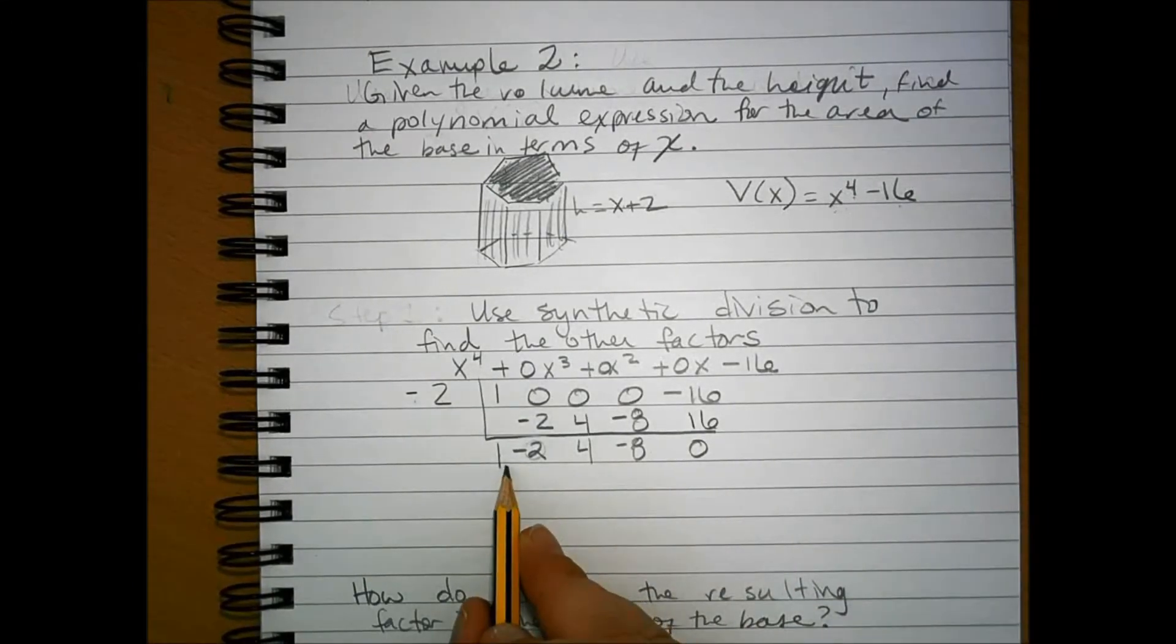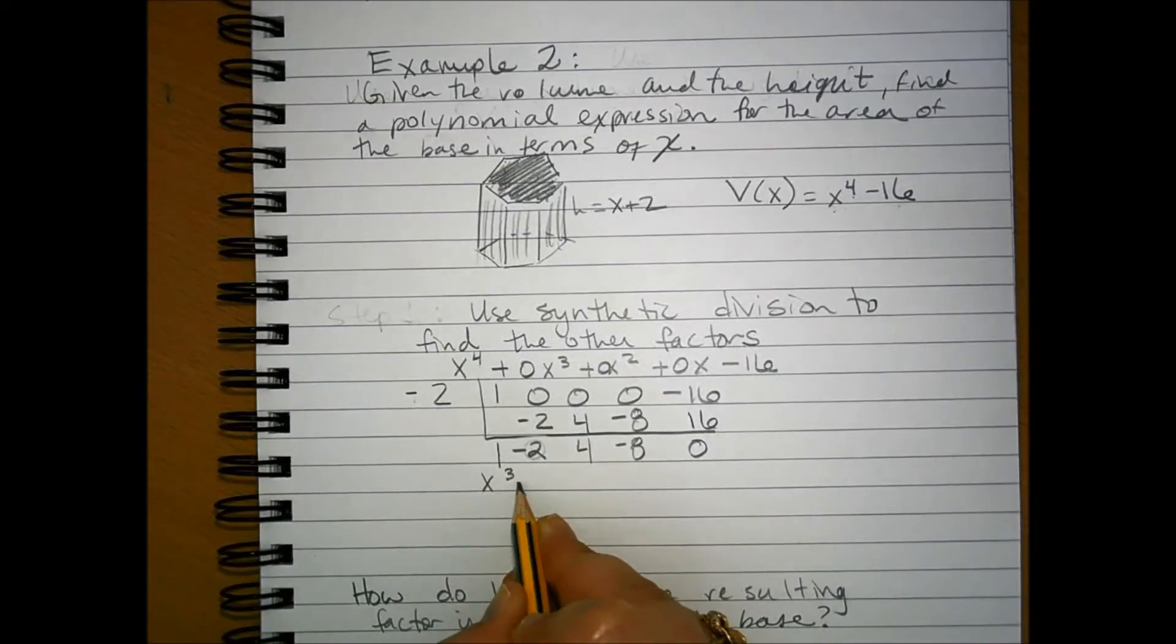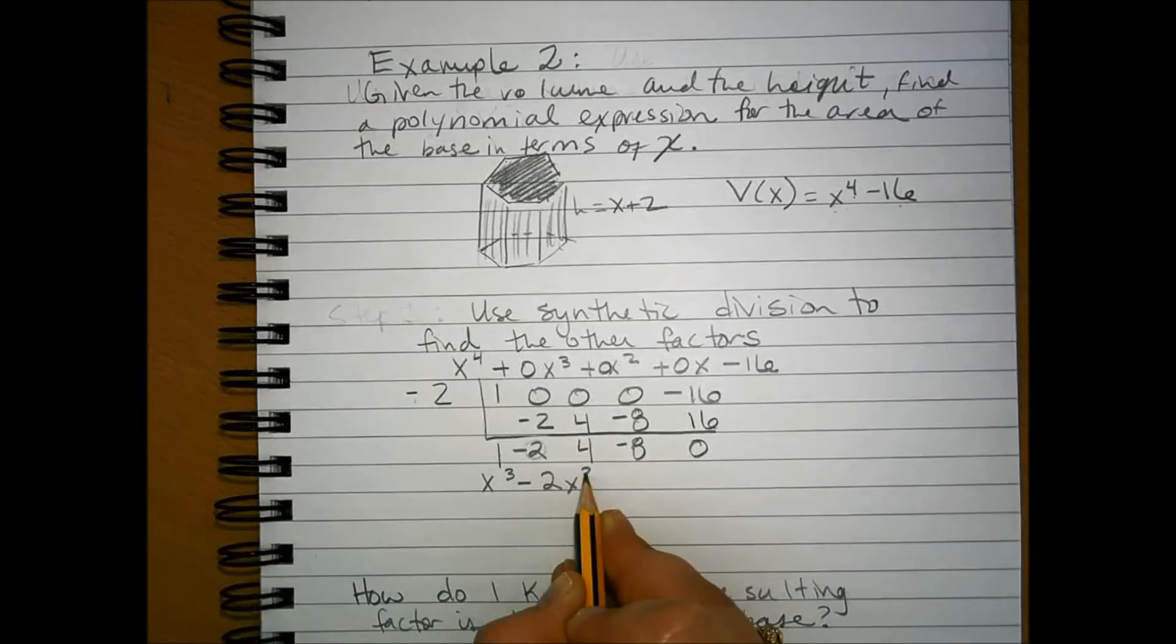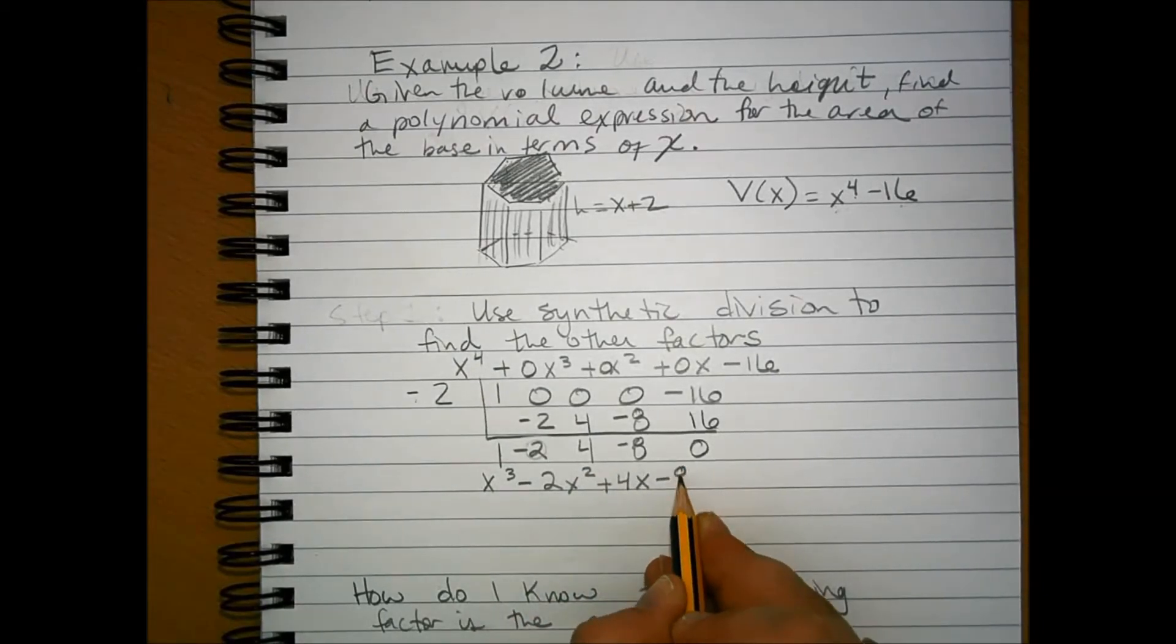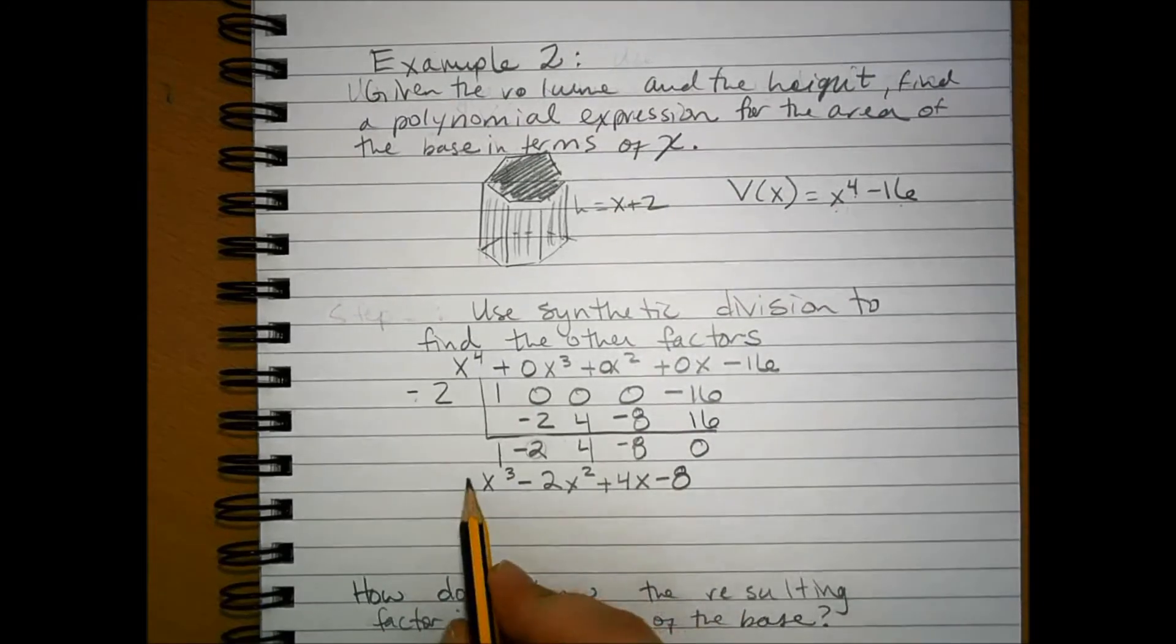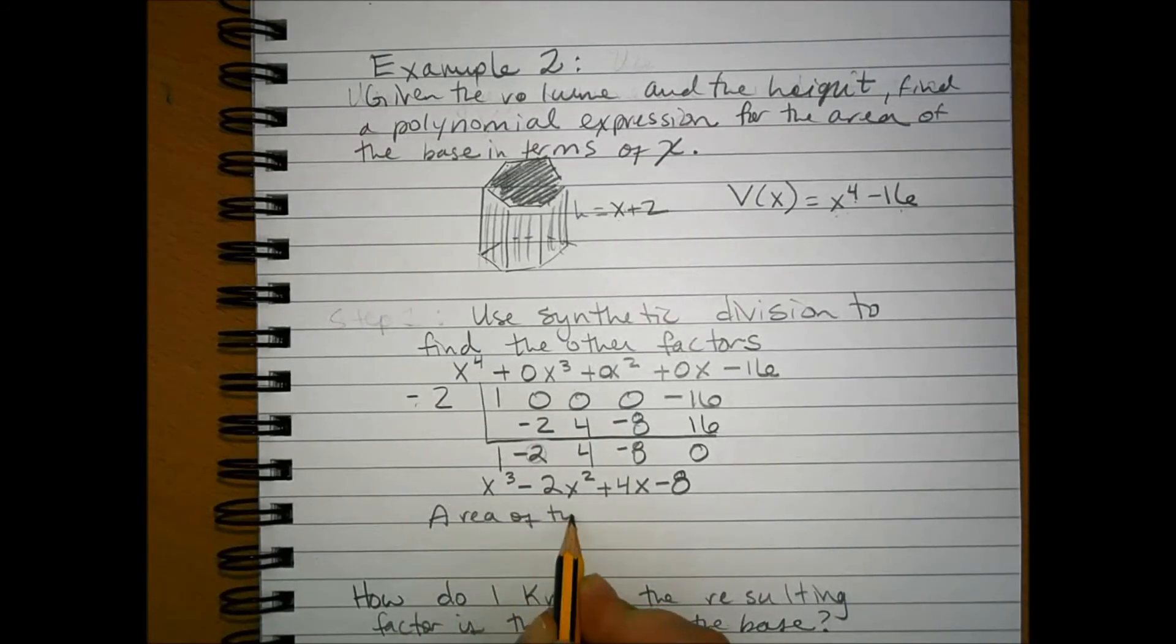So, my resulting polynomial is x cubed minus 2x squared plus 4x minus 8. This is equal to the area of the base.